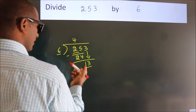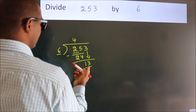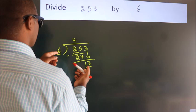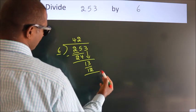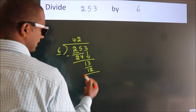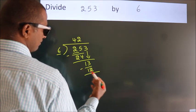So, 13. A number close to 13 in the 6 times table is 6 times 2, which is 12. Now, we subtract. We get 1.